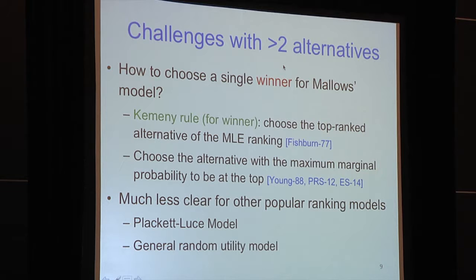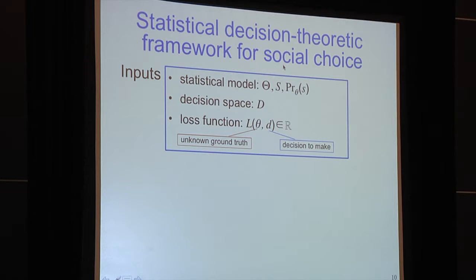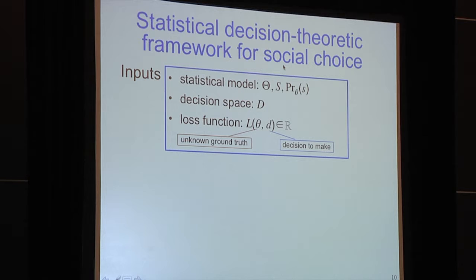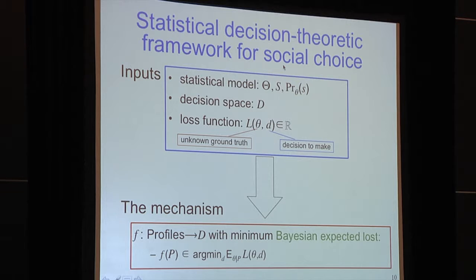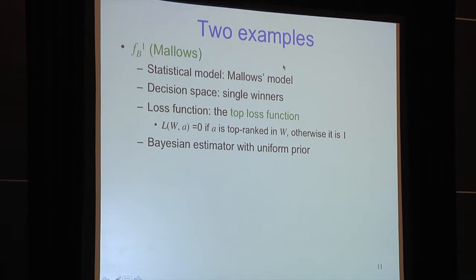This challenge motivates our paper's main contribution: a statistical decision theoretic framework. The inputs are three parts: a statistical model, a decision space D (which may differ from parameter space theta), and a loss function with two inputs — the unknown ground truth theta and the decision to be made. Given this setup, we focus on the Bayesian principle: the mechanism is a decision function minimizing Bayesian expected loss. Given preference profile P as data, we compute a posterior over the parameter space and choose decision D minimizing expected loss under that posterior.